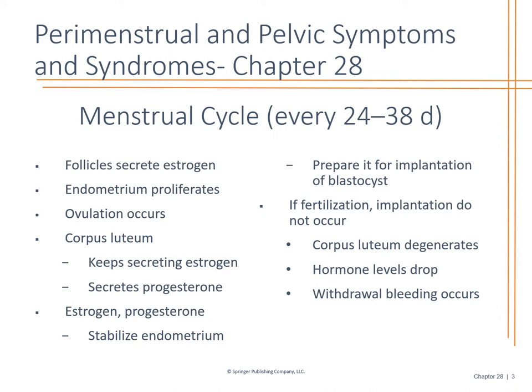When we look at the menstrual cycle, it occurs every 24 to 38 days. We have perimenstrual and pelvic symptoms and syndromes. The follicles secrete estrogen, the endometrium then proliferates, and ovulation occurs. Estrogen and progesterone stabilize the endometrium and prepare for implantation. If fertilization doesn't occur, the corpus luteum degenerates, hormone levels drop, the uterine lining is sloughed off, and you have withdrawal bleeding.